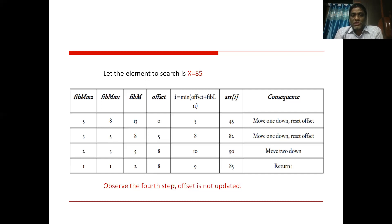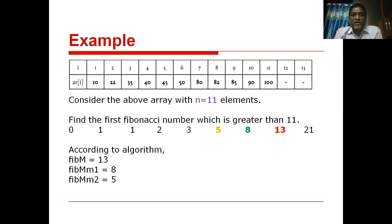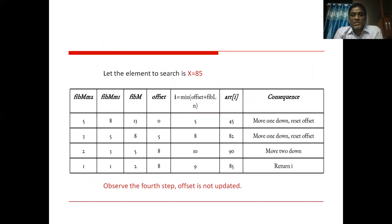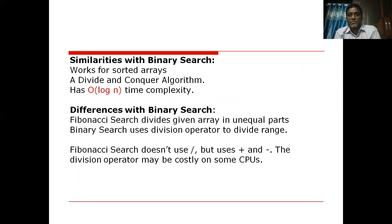I request all of you to try solving this problem for different key values. We did this with 85 as the key. Try searching for 35, 90, 25, and other values. Change the key and evaluate the algorithm so you get a clear picture of how it works.